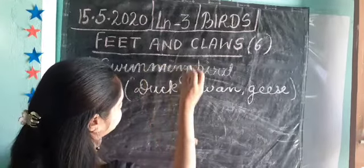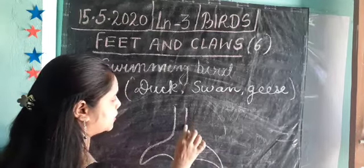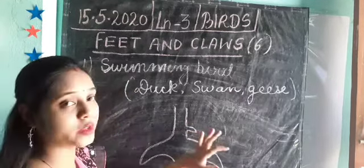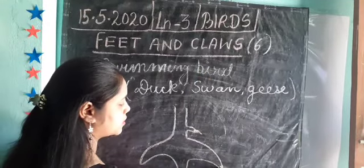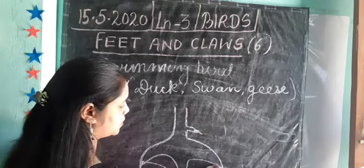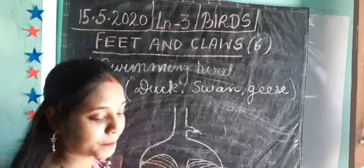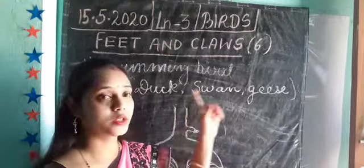Swimming birds have four toes — three in front and one at the back — and claws on every toe. Their special feature is that their feet have a web-like structure. The front toes are joined together by a skin called a web, so this type of feet is known as webbed feet. This is mainly found in ducks, swans, and geese.